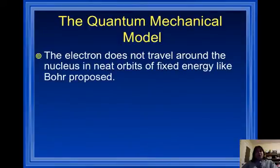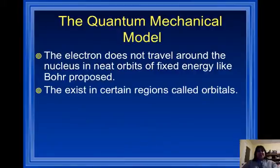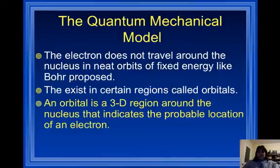Now the quantum mechanical model, the electron does not travel around the nucleus in the orbits of fixed energy like Bohr proposed. They exist in certain regions called orbitals. An orbital is a 3D region around the nucleus that indicates the probable location of an electron.